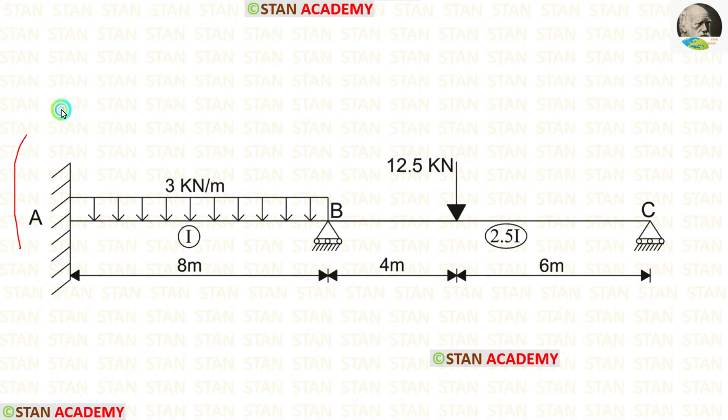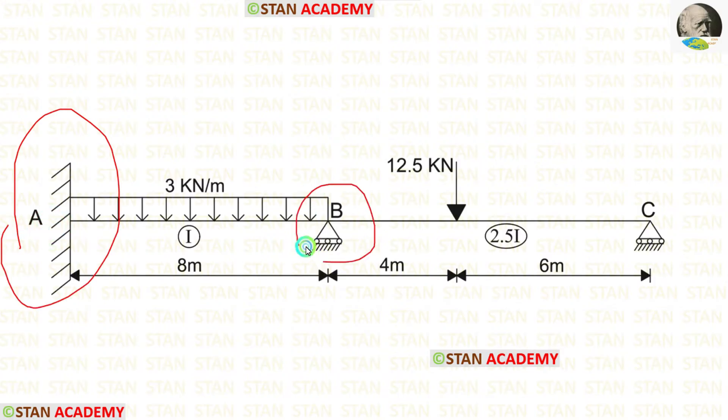The moment of inertia for span AB is I, and for span BC it is 2.5I. In point A, there is a fixed support. In points B and C, there are roller supports.